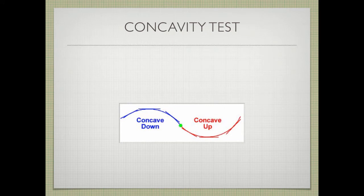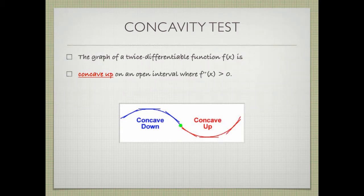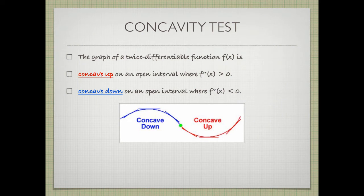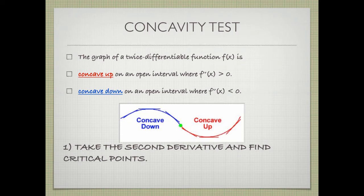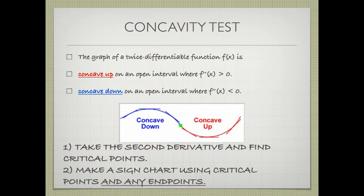We have the concavity test: the graph of a twice differentiable function f(x) is concave up on an open interval where the second derivative f''(x) is greater than zero, and concave down on an open interval where f''(x) is less than zero. What we do is take the second derivative, find critical points, and then make a sign chart using the critical points and the endpoints if there are any.